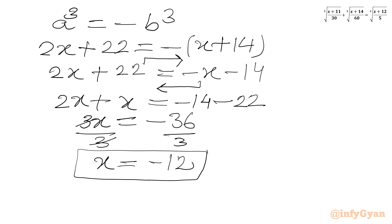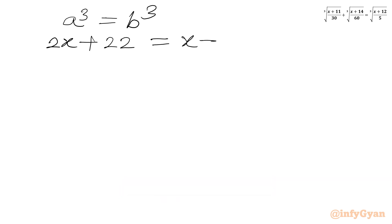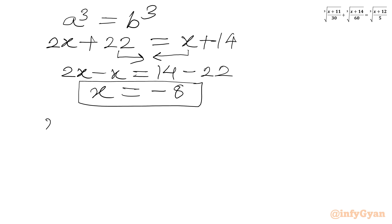Now for the second case a cube equals b cube. Substituting: 2x plus 22 equals x plus 14. Taking x to the LHS and 22 to the RHS: 2x minus x equals 14 minus 22, so x equals negative 8. Our final answers are x equals negative 8 and negative 12. Now we will verify our answers.